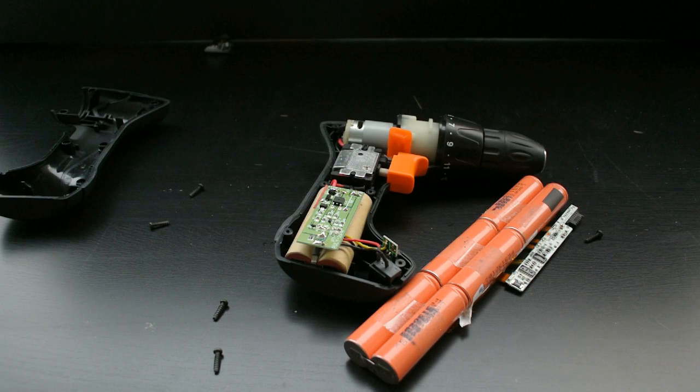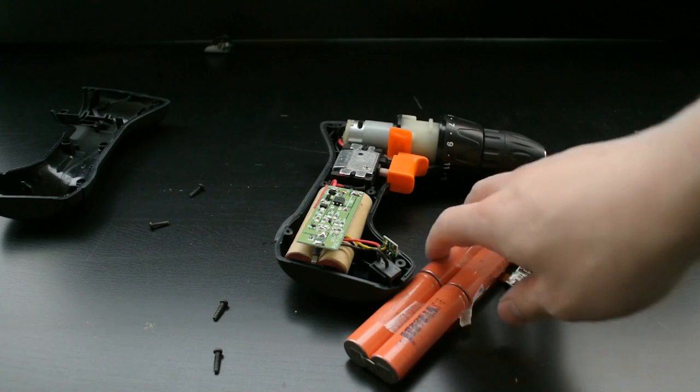The voltage of the laptop cells are the same 3.6 volts as the cordless drill batteries but they are bigger. The main difference being that the new batteries would be almost double the capacity of the old ones.